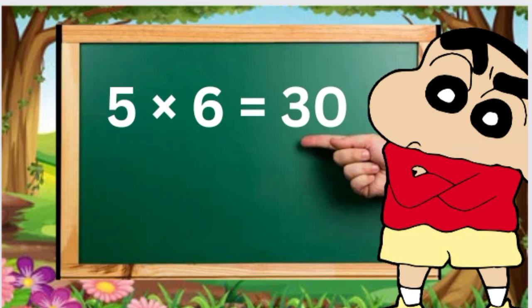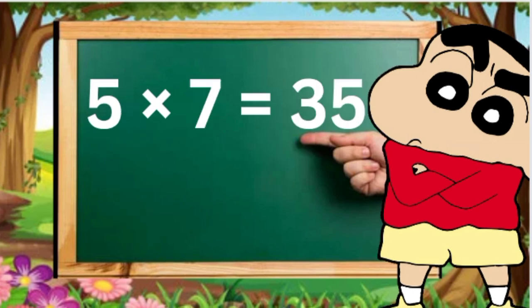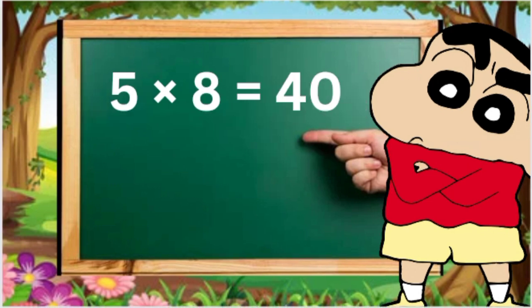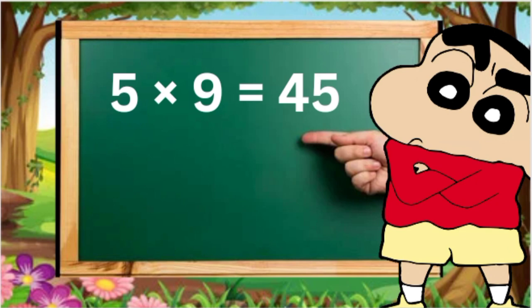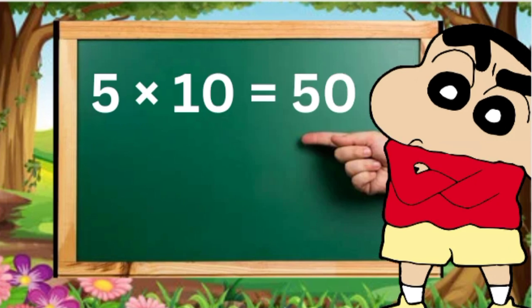5 6s are 30, 5 7s are 35, 5 8s are 40, 5 9s are 45, 5 10s are 50.